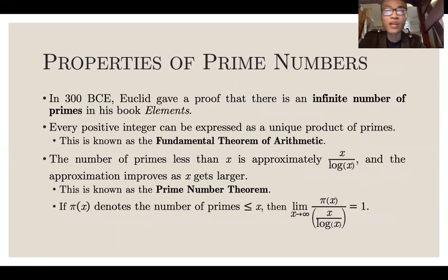Here's some properties of primes. In 300 BCE, Euclid proved that there's an infinite number of primes and that every positive integer can be expressed as a unique product of primes. The key thing here is that the number of primes less than x is approximate x over log of x. This is known as the prime number theorem.